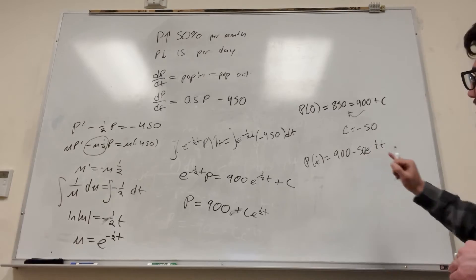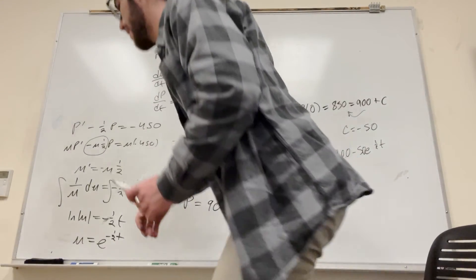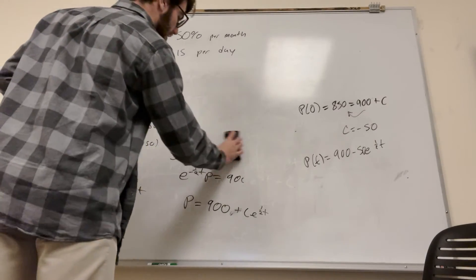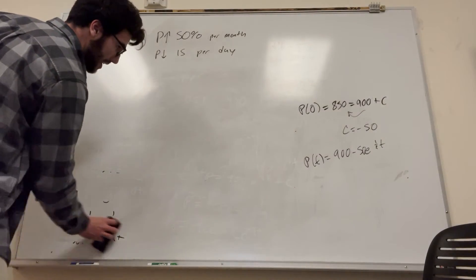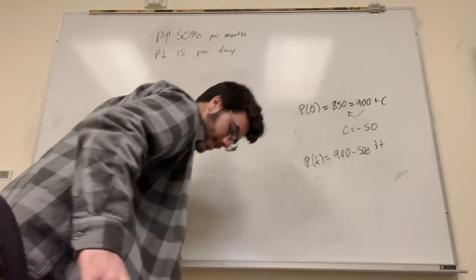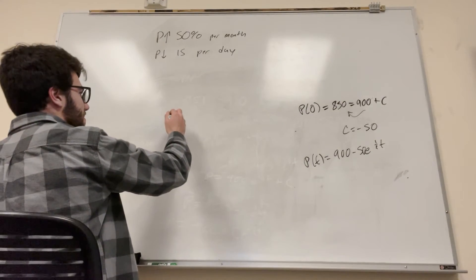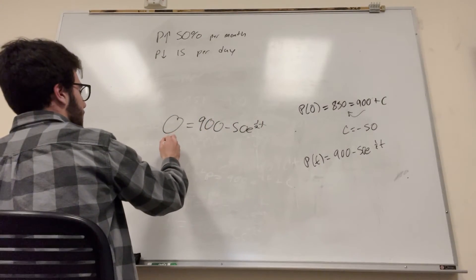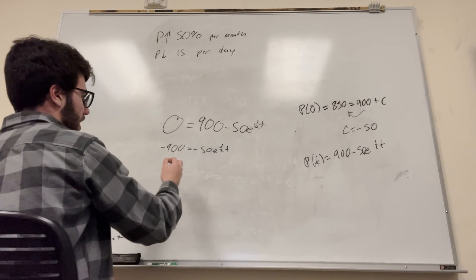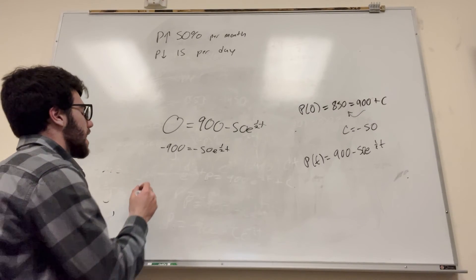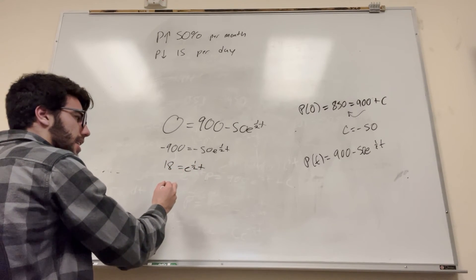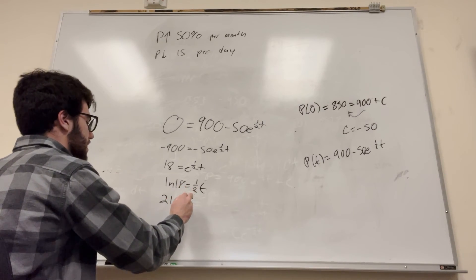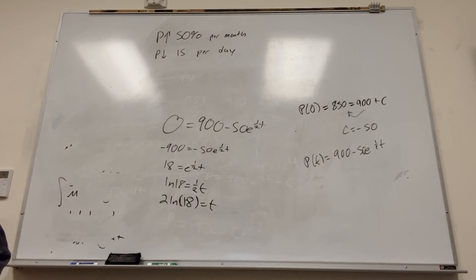Now we find how long until extinction. Set P = 0: 0 = 900 - 50·e^(t/2). Moving terms: 900 = 50·e^(t/2), so 18 = e^(t/2). Taking the natural log: ln(18) = t/2, so t = 2·ln(18). Plugging into a calculator gives approximately 5.78 months.